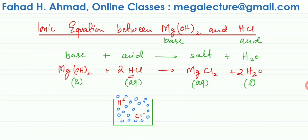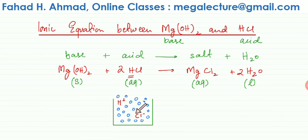What we precisely mean by dissociation is that if you mix HCl in water, it breaks down into H⁺ and Cl⁻ ions, as you can see in this visual. Water molecules completely surround them, so they can't get back together. So whenever HCl is in the aqueous state, the H⁺ and Cl⁻ ions are dissociated and separated from each other.